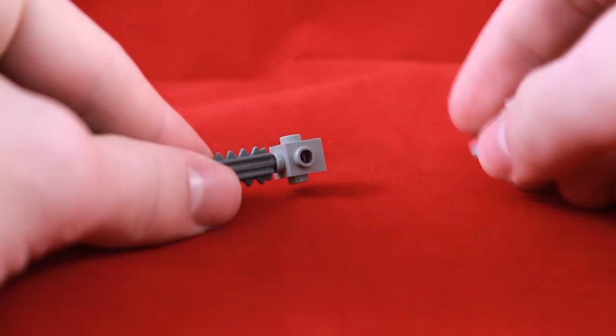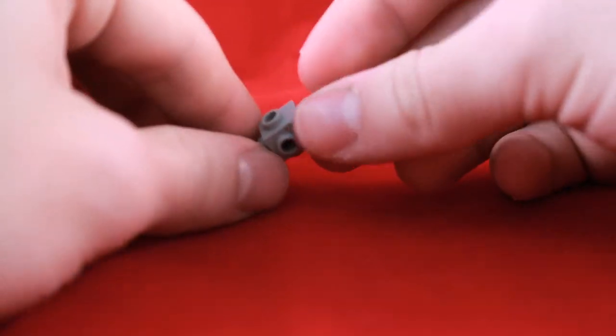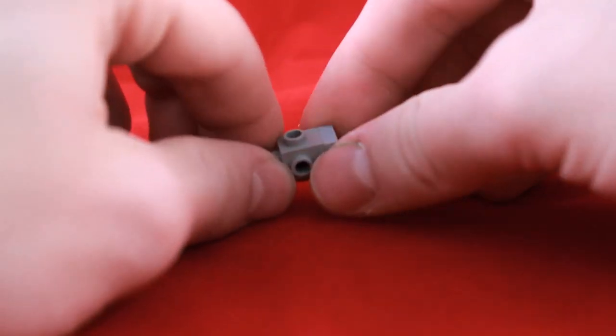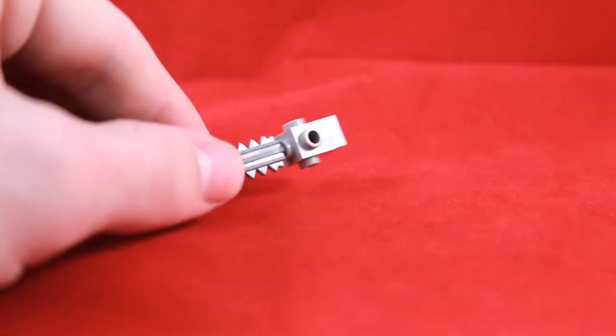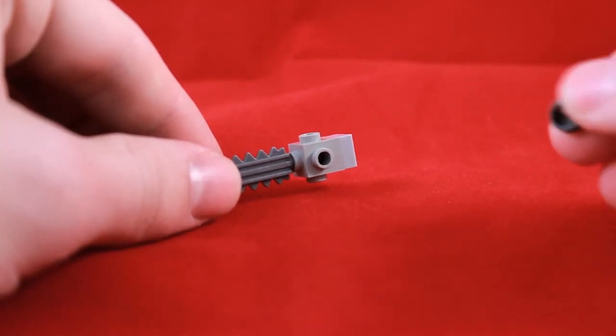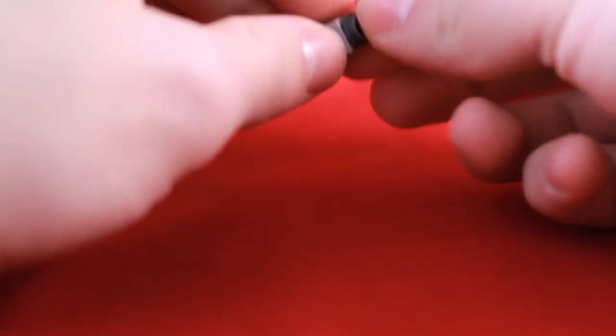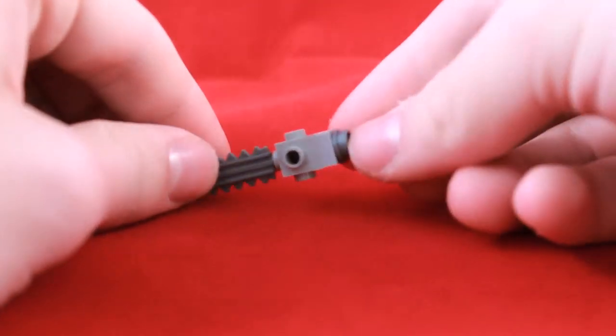Then, take your 1x1 plate, place it on the back like so. And then take one of your 1x1 studs and place it on the very back of that.